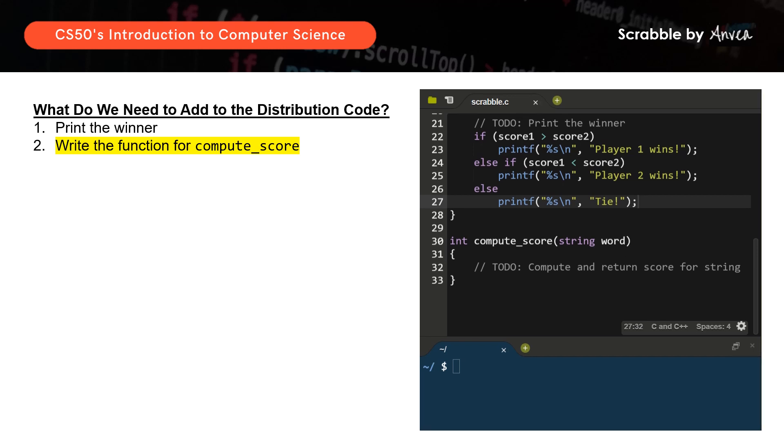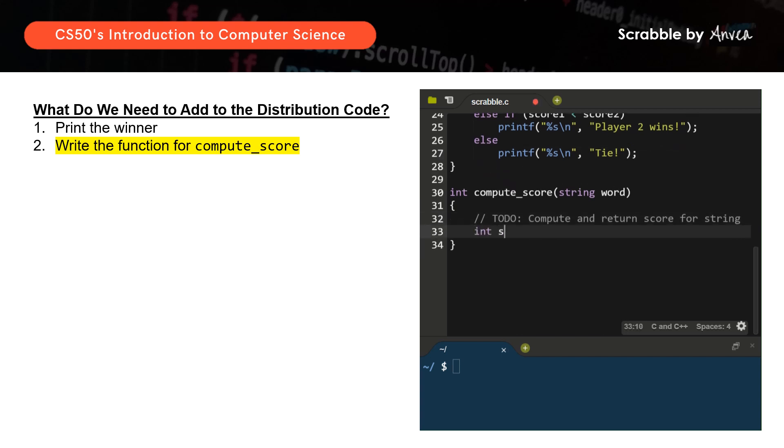And now we can put it all together. So next we will need to compute and return the score for string. So first let's start by saying that there will be an integer called score, and it starts with 0 first. So now what I want to do is to compute the score for each character. So like I mentioned, we will use len to represent the length. So that would be the length word. So now what I will say is that for integer i starting with 0, and as long as i is less than the length of the word, then we will increase by 1.